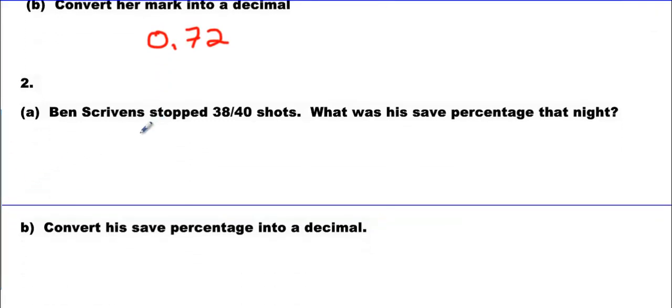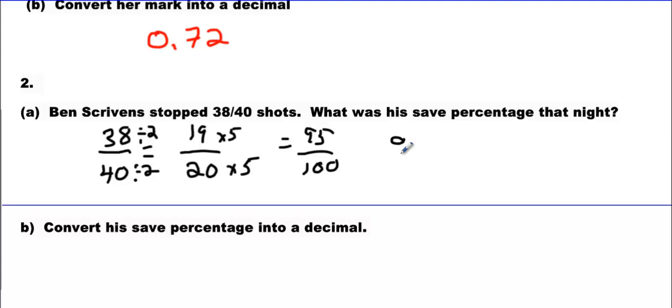How about my main man, Ben Scrivens? He stopped 38 out of 40 shots. That's a pretty good total. He faced 40 shots. He's with the Oilers. He's got to get used to that sort of thing every day. What was his save percentage that night? Do we have to do long division here? We don't. You know why? Because they're both even. And I know if I cut 40 in half, I divide by 2, both of them. I'm going to get a 20 on the bottom. And I like 20s because I can turn them into hundreds. And on the top, I'm going to get 19. I times this by 5 and you're going to get 95 over 100, which is 95%.